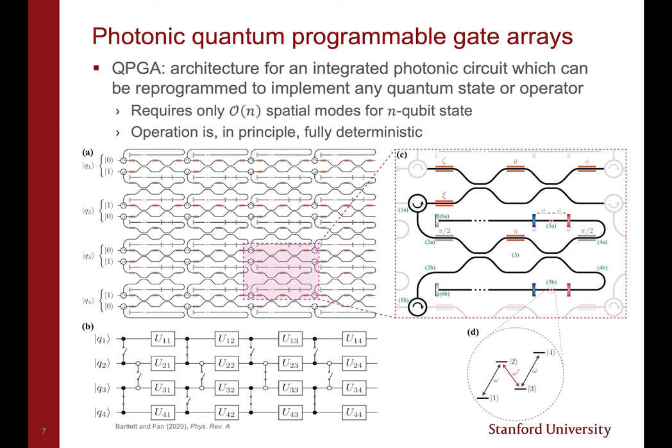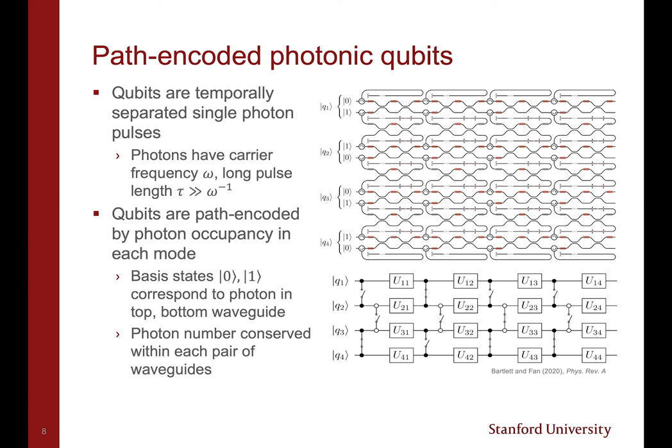A schematic of our proposed architecture is shown here. The physical layout for a 4-qubit QPGA is shown in panel A, and the corresponding logical quantum circuit is shown in B. The architecture is a lattice of programmable optical cells, one of which is depicted in C, and the energy structure of the embedded quantum emitters is shown in D. I will discuss each of these in more detail shortly.